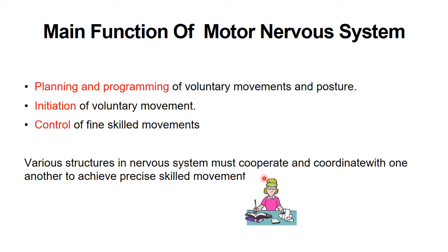Various structures in the nervous system cooperate and coordinate with one another to achieve this precise skilled movement. As an example, a lady writing in a notebook demonstrates precise and skilled movement of the fingers and head. Similarly, operating an intelligent machine shows that such movement is purposeful, skilled, and precise.